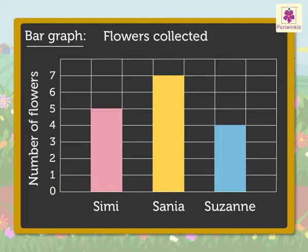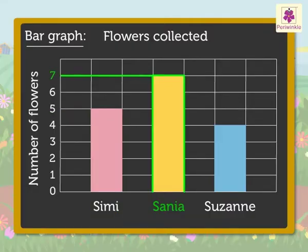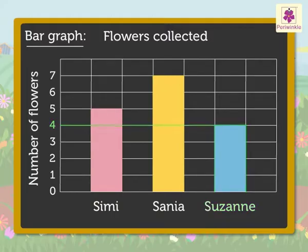Hence, from the bar graph we can say Simi collected 5 flowers, Sanya collected 7 flowers and Suzanne collected 4 flowers.